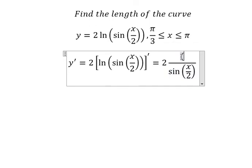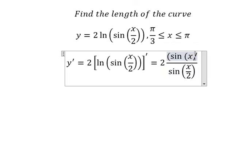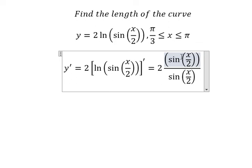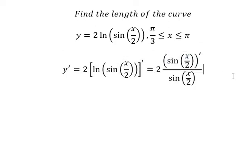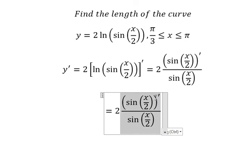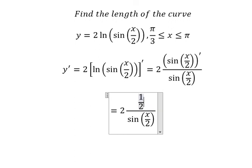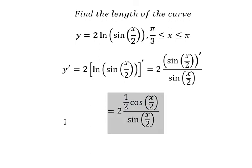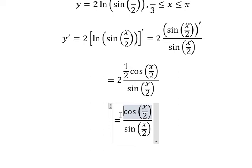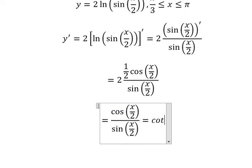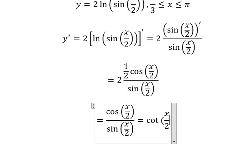Later that, we do first the derivative of sine of x over 2 on the numerator. So we have 1 over 2 cosine of x over 2. The 2 and 1 over 2 we simplify, and we have cosine of x over 2.